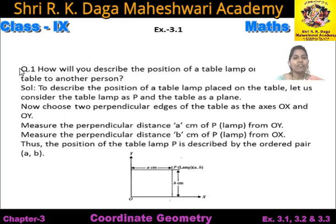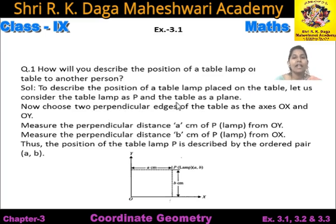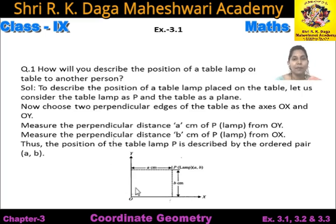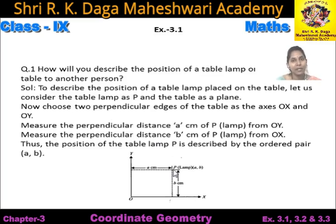Now start exercise 3.1. The first question of exercise 3.1 is: How will you describe the position of a table lamp on the table to another person? Kisi table ke upar ek table lamp rakha hai, iski position ko aap kisi dusre person ko batana chahte hain, toh aap ise kis tarah se describe karenge? To describe the position, let us consider the table lamp as P and the table as a plane.